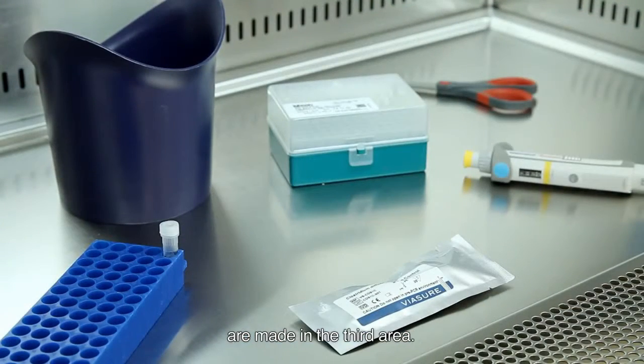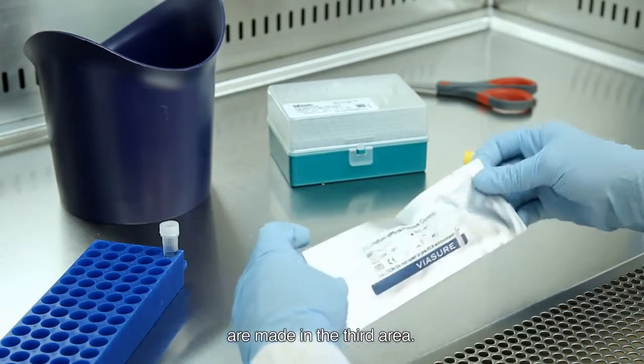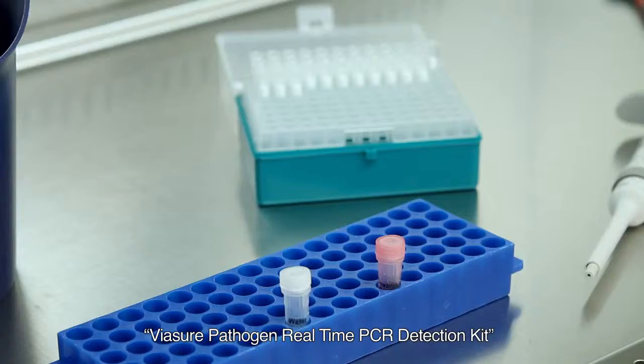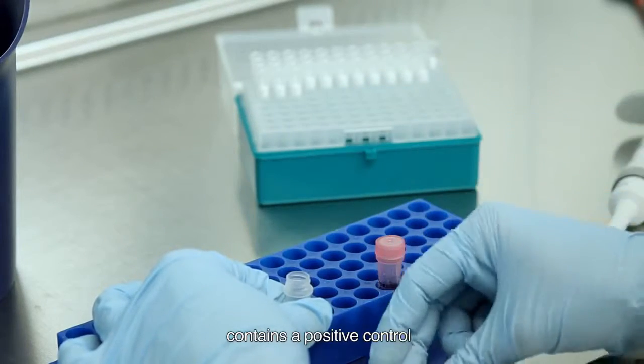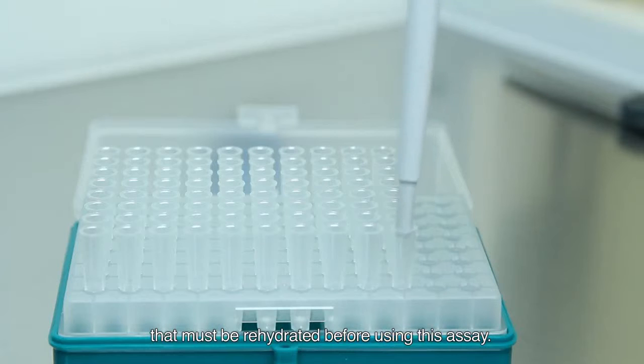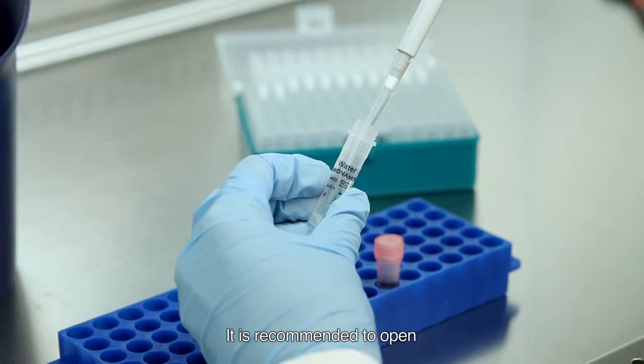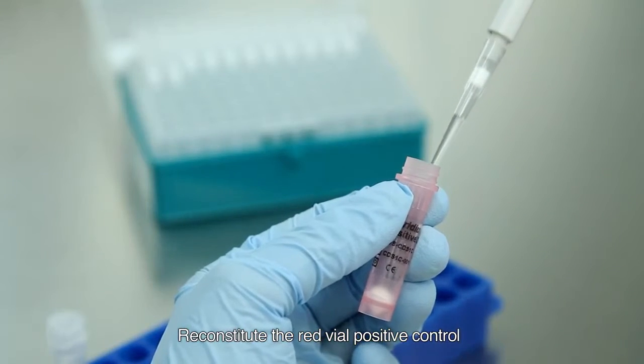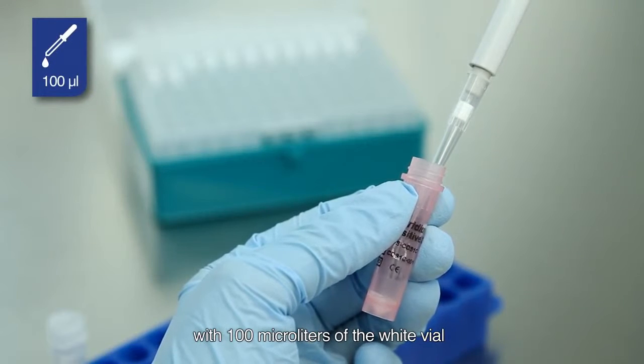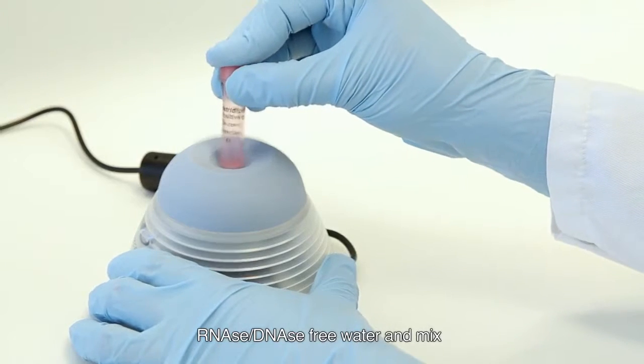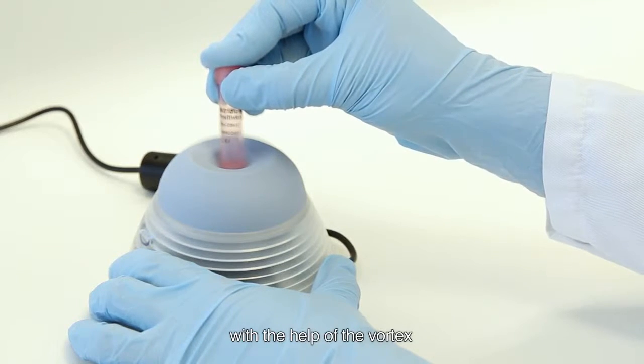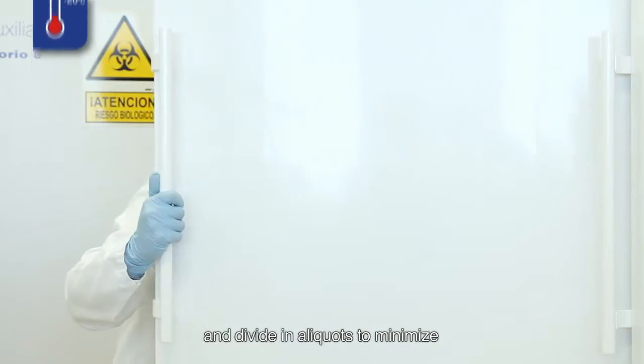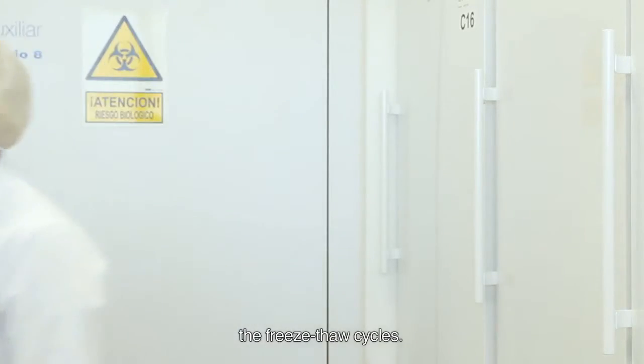Two independent processes are made in the third area. First, the positive control rehydration. Viassure Pathogen Real-Time PCR Detection Kit contains a positive control that must be rehydrated before using this assay. It is recommended to open and manipulate before starting with the assay. Reconstitute the red vial positive control with 100 µl of the white vial RNA-SE DNA-SE free water and mix with the help of the vortex. Store at minus 20 degrees after resuspension and divide in aliquots to minimize the freeze-thaw cycles.